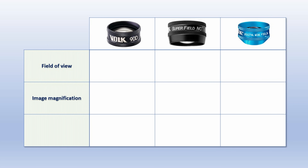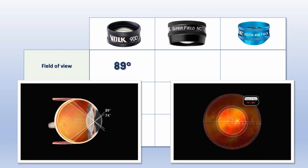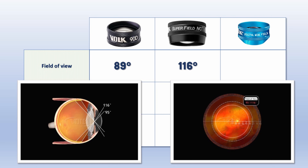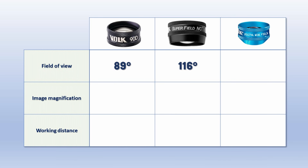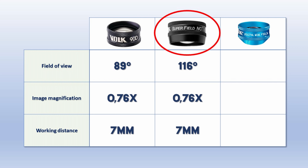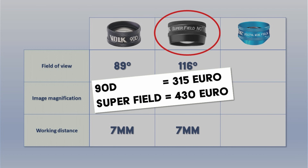The three distinguishing factors are field of view, image magnification, and working distance. The field of view has improved from generation to generation: the 90D has 89 degrees, the Superfield 116 degrees, and the Digital Wide Field even has 124 degrees. The 90D and the Superfield both have a working distance of 7mm and an image magnification of 0.76, but the 90D has about 90 degrees of field of view versus 116 for the Superfield. If you want to get only one lens I would recommend the Superfield — it's a bit bigger and heavier than the 90D and more expensive, but it's a good compromise between image size and field of view.